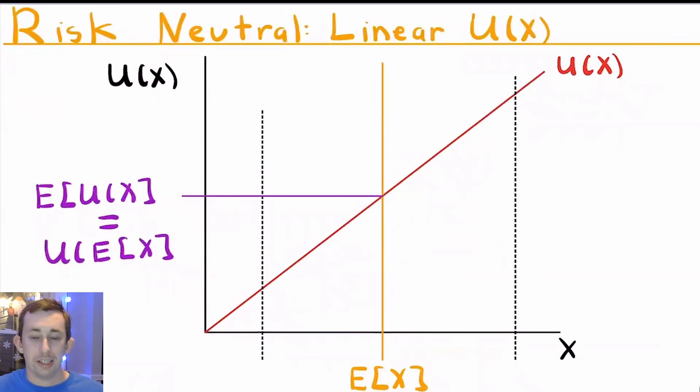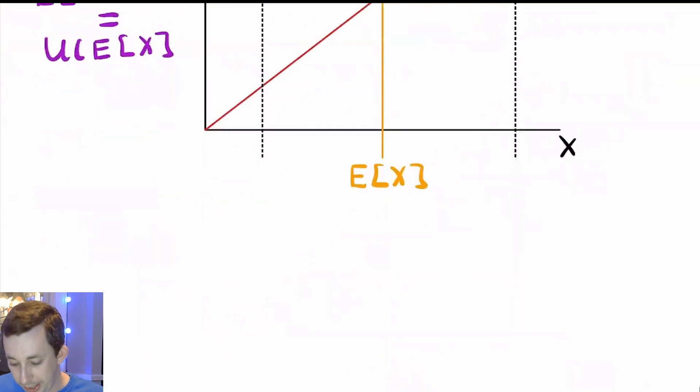If we take a risk neutral person, notice they have a linear utility, which means that they should be indifferent between taking that same $5 or playing the gamble between $0 and $10. And that's exactly what we see. The expected utility is equal to the utility of the expected value, which means they should be indifferent between the gamble and taking the money for sure.